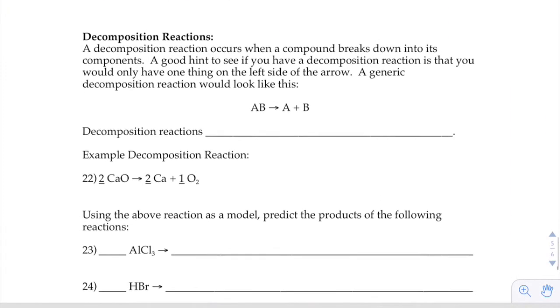Last type, decomposition. Decomposition reactions, they're really easy to spot because there's only one thing on the left-hand side of the arrow. If there's only one chemical on the left-hand side of the arrow, it's going to be a decomposition because you can't smush it together with something else because there's nothing else there. You can't trade places because there's nothing else there. The only thing you can do is split up.